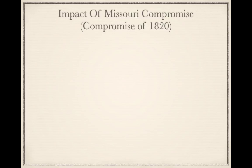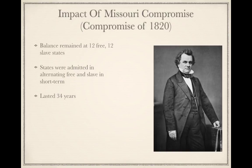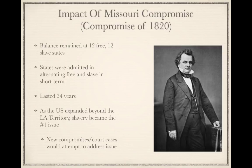What are the impacts of this compromise? In the short term, the balance remains at 12 free and 12 slave states. States will be admitted in alternating free and slave fashion — one year a free state, the next a slave state. This will last for 34 years until overturned by Stephen Douglas. As the U.S. expands beyond the Louisiana Territory, slavery becomes the number one issue, tearing the country apart. New compromises and court cases will attempt to address slavery, but ultimately all of them fail, leading to the Civil War in 1861.